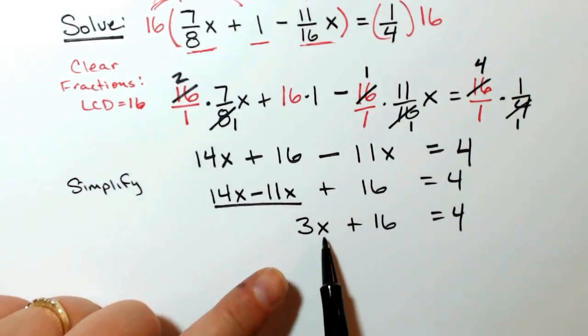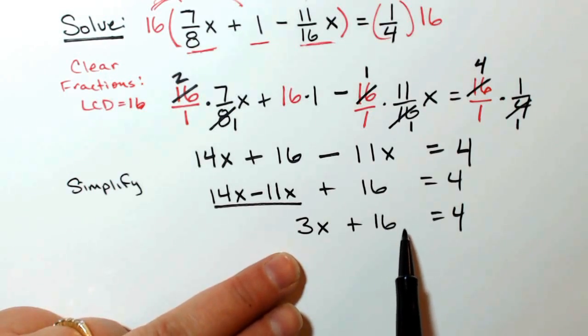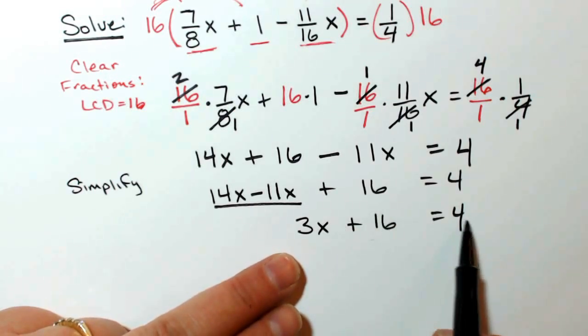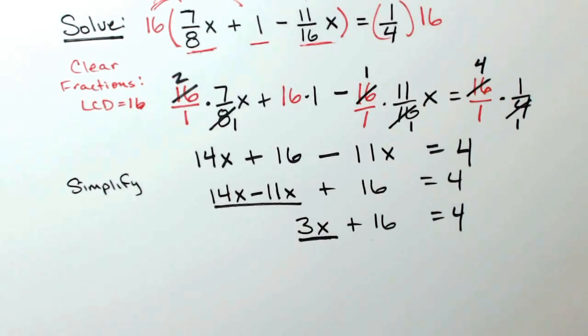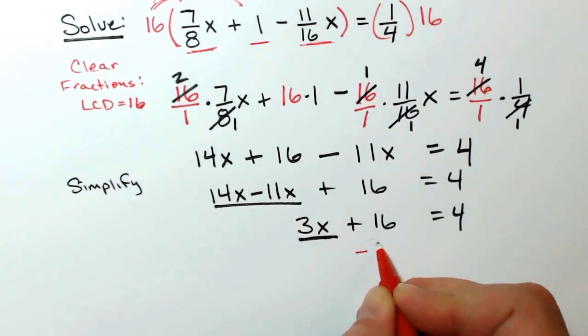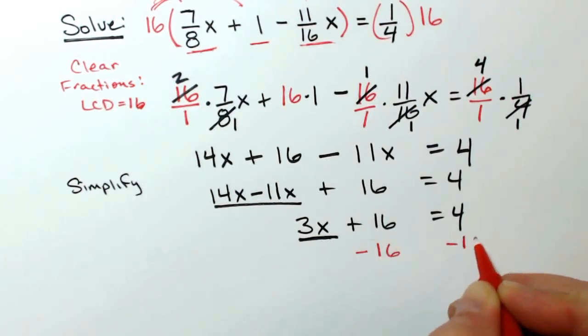At this point, I can use my addition property of equality to eliminate the constant term to isolate the 3x, my variable term. So in order to do that, I'm going to subtract 16 from both sides of the equation.